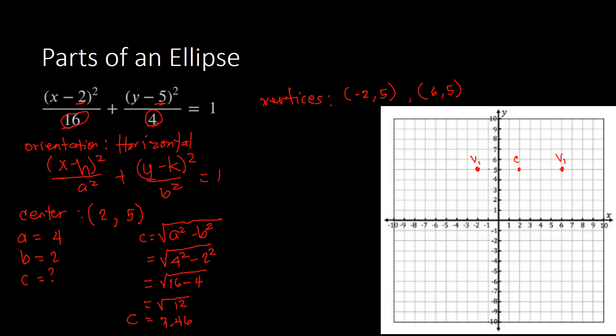Next, we identify our foci. The foci are located inward of our vertices toward the center, measured from the center at c, which is 3.46 units. So from the center, we count 3 units and estimate 0.46 — 1, 2, 3, and about 0.46 — this is focus 1. From the center going the other direction, 3 units and 0.46 — 1, 2, 3, and 0.46 — this is focus 2.